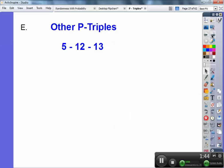Here's some more common P-triples. 5, 12, 13. 5 squared plus 12 squared equals 13 squared. So if I take 5, 12, 13 and multiply it by 2, that's another P-triple. 5 times 2 is 10, 12 times 2, and 13 times 2, that's another P-triple.